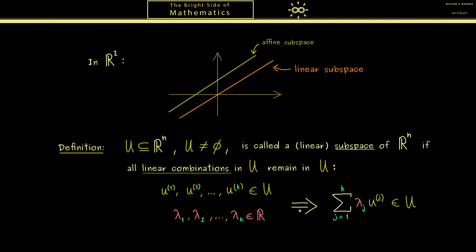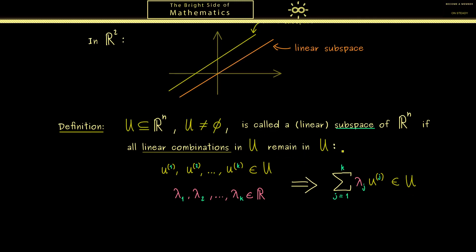And now the important claim for a subspace is that this linear combination is also an element in U. In other words, we are not able to leave the set U by just scaling or adding vectors from the set U. And exactly this property makes a non-empty set to a subspace.